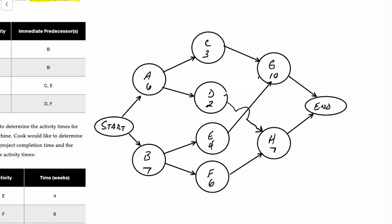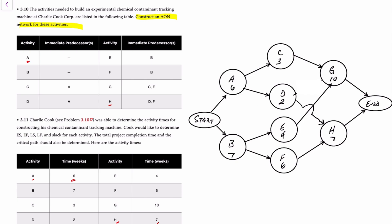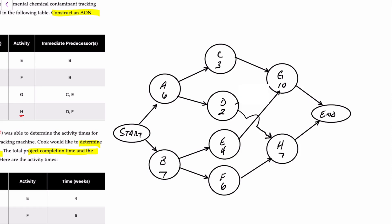That solves the requirement for problem 3.10. After putting in the activity times, our second objective is to determine the earliest start and earliest finish times, also known as ES and EF, and the latest start and latest finish times, also known as LS and LF for each activity, as well as the slack. We'll also determine the project completion time and the critical path. In order to figure out the earliest start and finish times, we can do something called a forward pass.